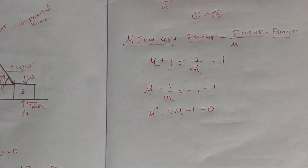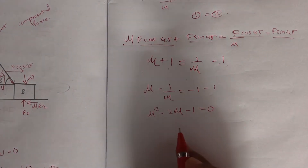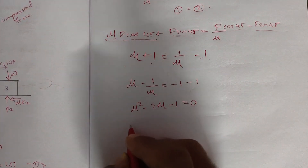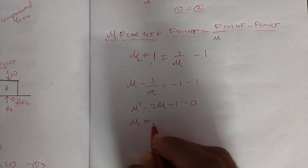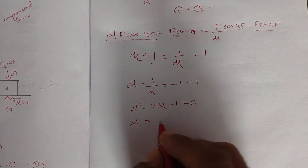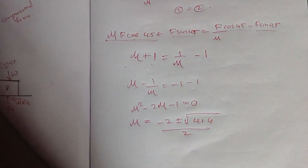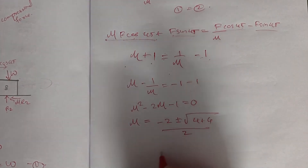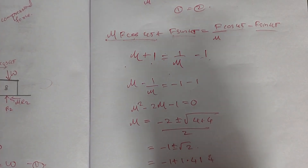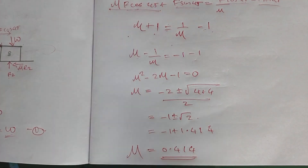We have the quadratic equation: mu squared minus 2 mu minus 1 equals zero. Applying the quadratic formula: mu equals minus b plus or minus root of b squared minus 4ac, all over 2a. This gives mu equals minus 2 plus or minus root of 4 plus 4, all over 2. Solving, mu equals minus 1 plus or minus root 2, which gives mu equals minus 1 plus 1.414 equals 0.414.